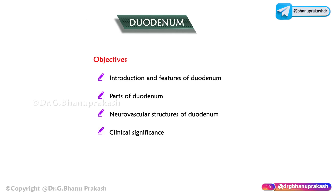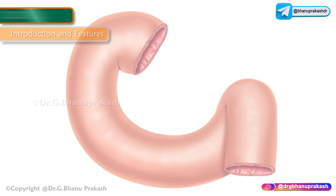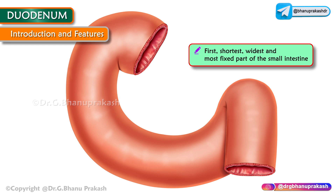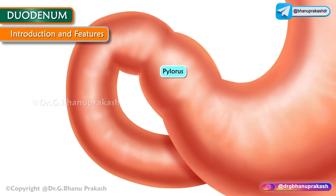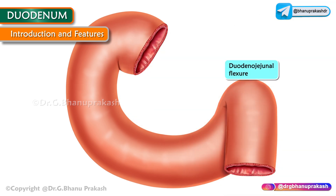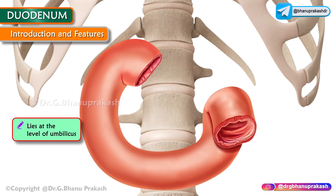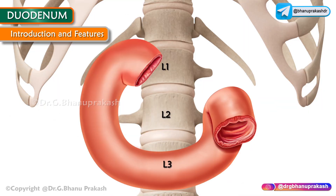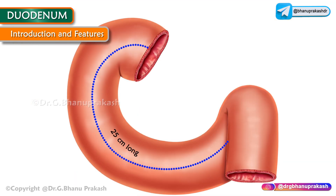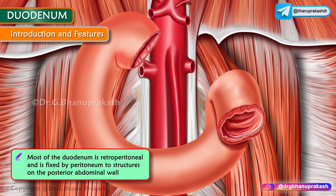The topic of discussion for today's session is the anatomy of the duodenum as well as its clinical importance. The duodenum is the first, shortest, widest, and most fixed part of the small intestine. It has a C-shaped course around the head of the pancreas. It begins at the pylorus and ends at the duodeno-jejunal flexure, lying at the level of the umbilicus, opposite the first, second, and third lumbar vertebrae. It is 25 centimeters long, and most of the duodenum is retroperitoneal.